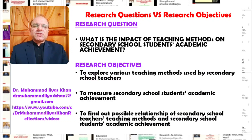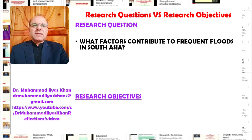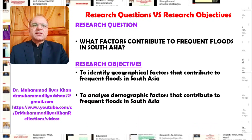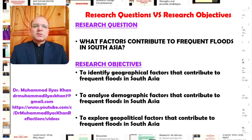If we achieve these three objectives through the process of our research, we will be able to answer our bigger research question. Here is another example related to social sciences. The bigger question is: What factors contribute to frequent floods in South Asia? In order to find an answer to this bigger question, one set of research objectives that we can formulate includes these three research objectives.